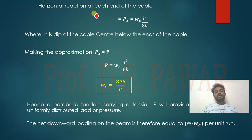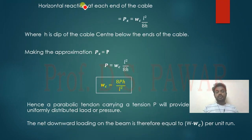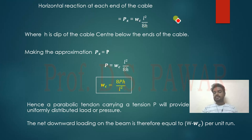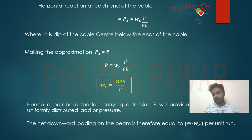The horizontal reaction at each end of the cable: here we have forces Px and Py. The horizontal force reaction at each end of the cable is Px equal to WcL² divided by 8. This is simply the formula M = WcL²/8 for a simply supported beam subjected to UDL.